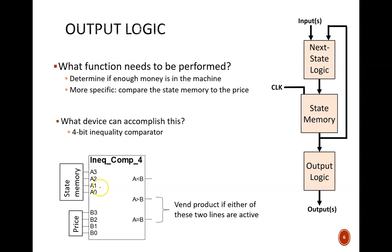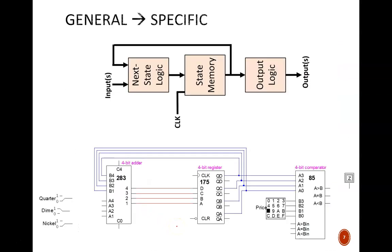On this slide, we see how the general finite state machine model has been transformed into specific devices for this application. Each of the devices mentioned, 4-bit adder, register, and comparator, are available as 7400 series integrated circuits.